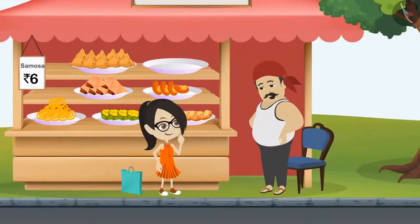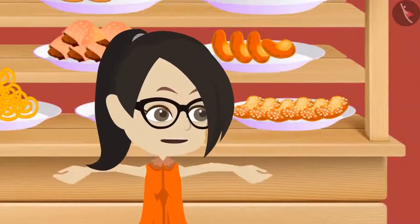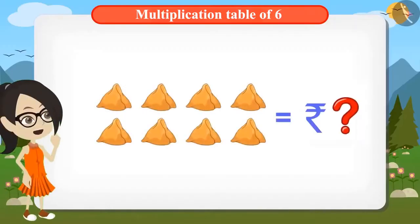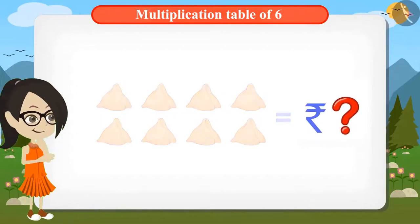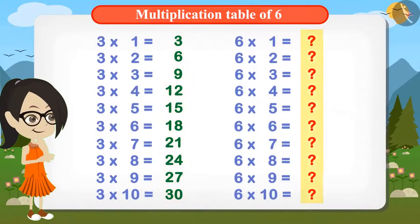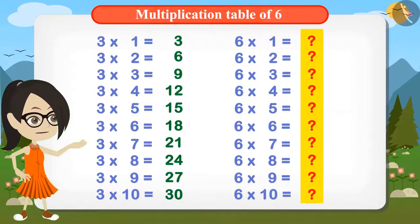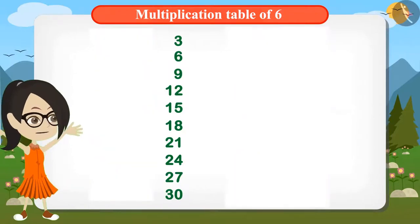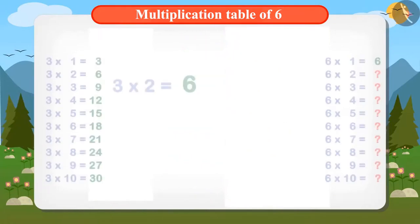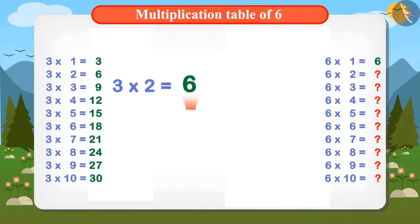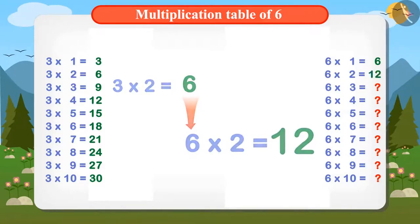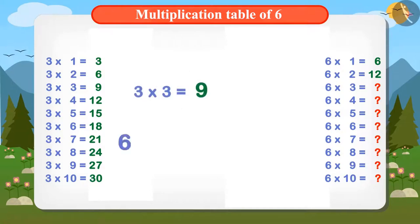By this method, find out the table of 6 and calculate the amount to be paid for 8 samosas. To find the multiplication table of 6, multiply 2 with the answer of the multiplication table of 3. 3 times 2 is 6, so 6 times 2 will be 12. 3 times 3 is 9, so 6 multiplied by 3 will be 9 times 2, that is 18. Now I can find out the table of 6 in this manner.